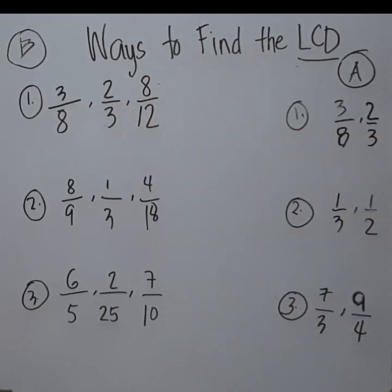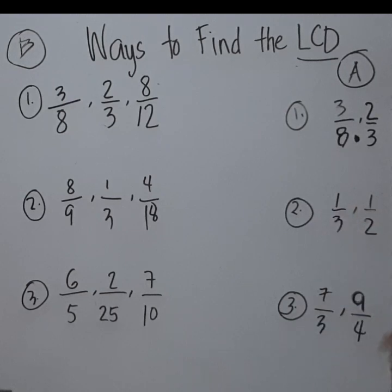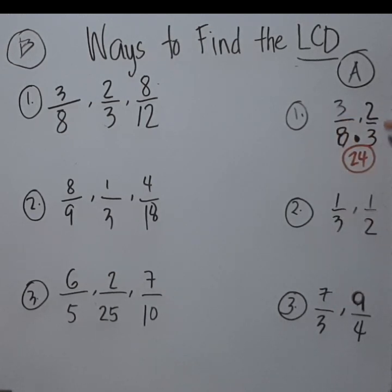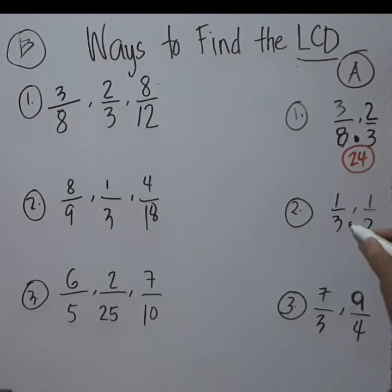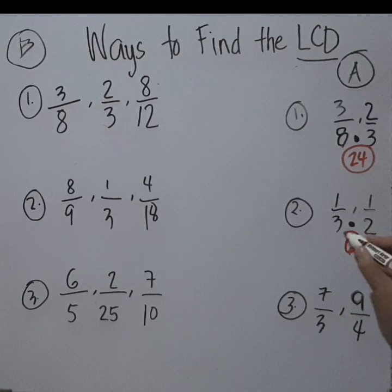For Option A, let's start with Option A. We have 8 and 3 as denominators. What we need to do is just multiply both the denominators. So 8 times 3 will give us 24 — so 24 is the LCD for the first set of fractions. For the second number, same process: just multiply both the denominators, so 3 times 2 is 6, so 6 is the LCD for those fractions.